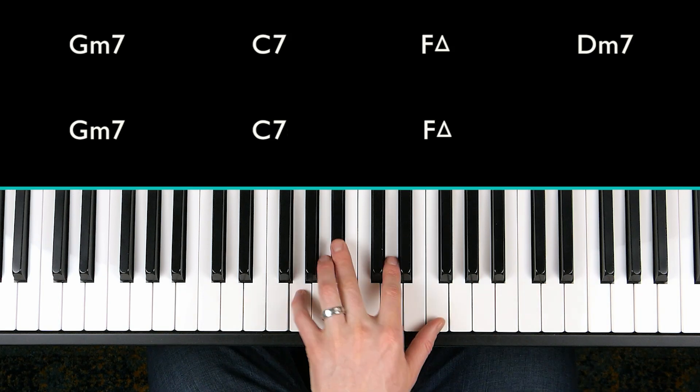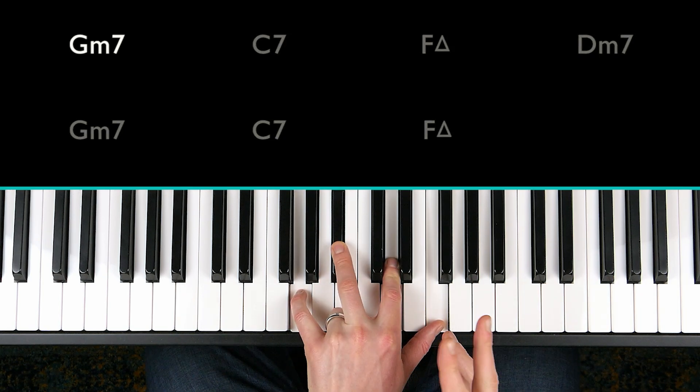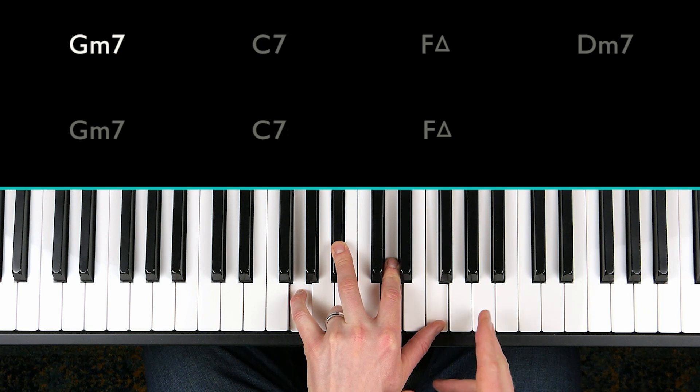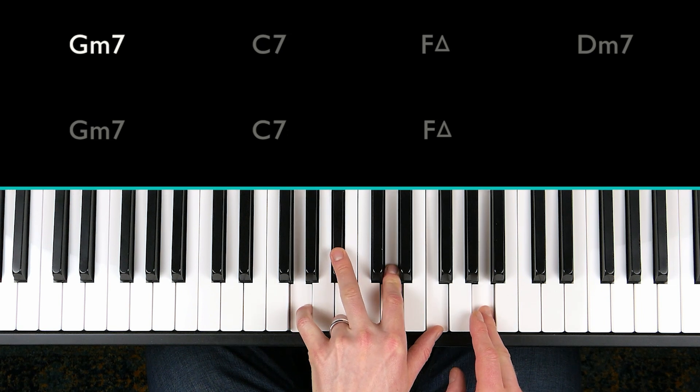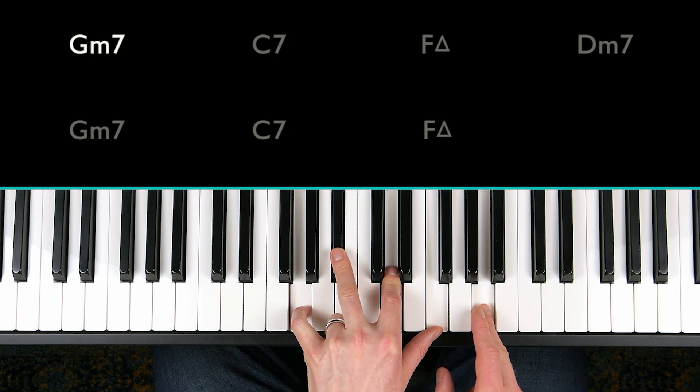So let's get straight in. The first chord is G minor seven. This is the two chord of a two-five-one. And the melody note starts on an A. So which scale degree is A when played over G? That's the ninth.